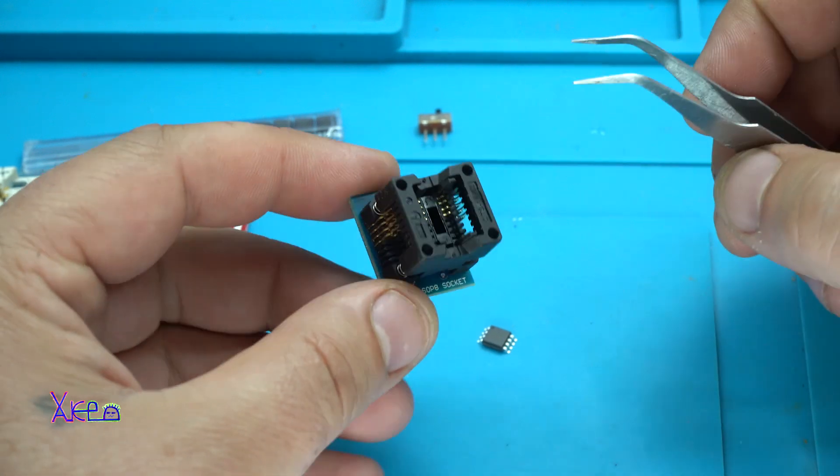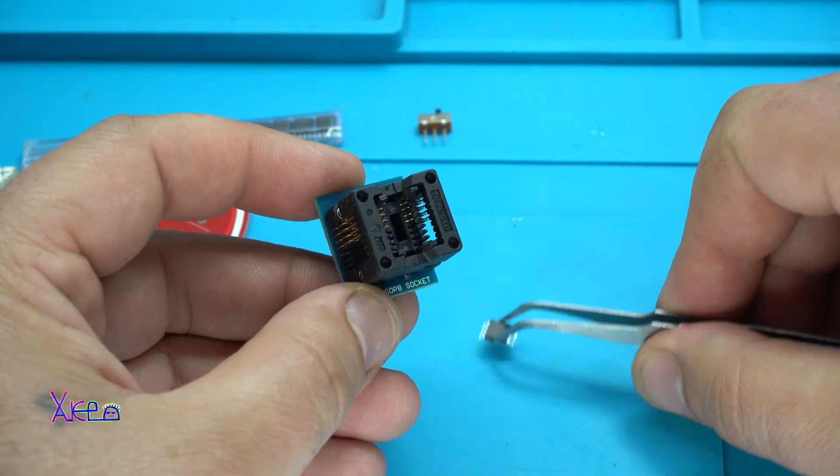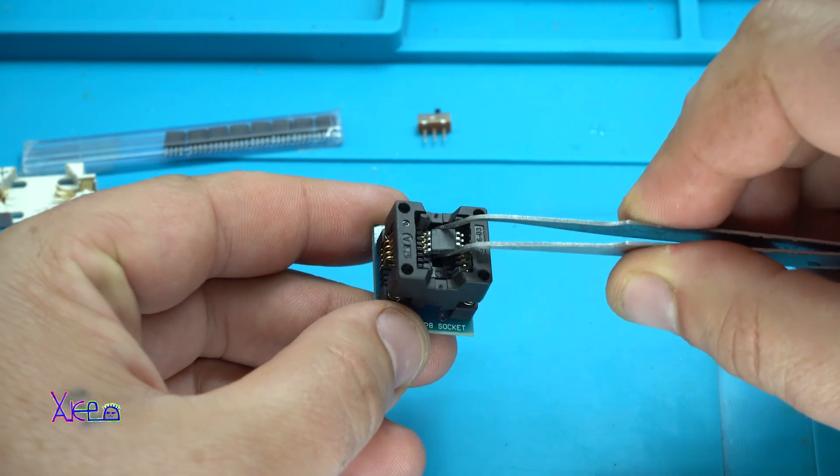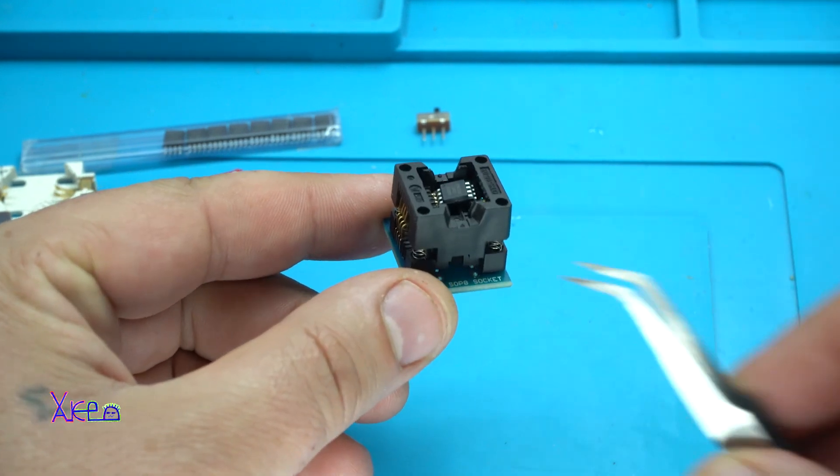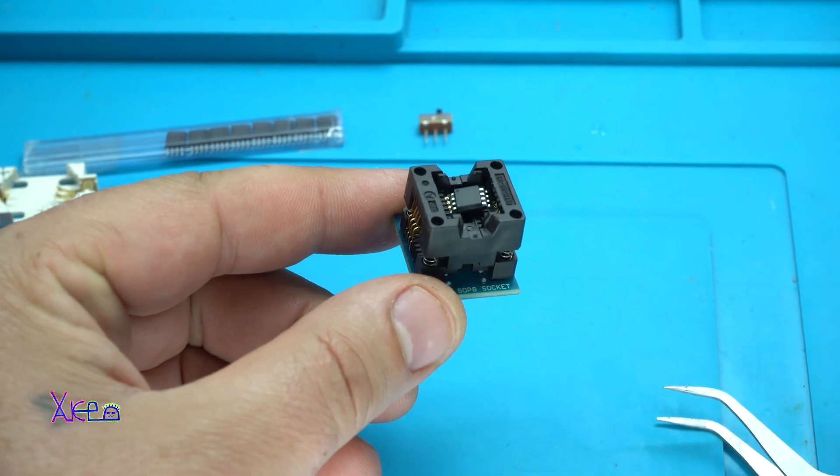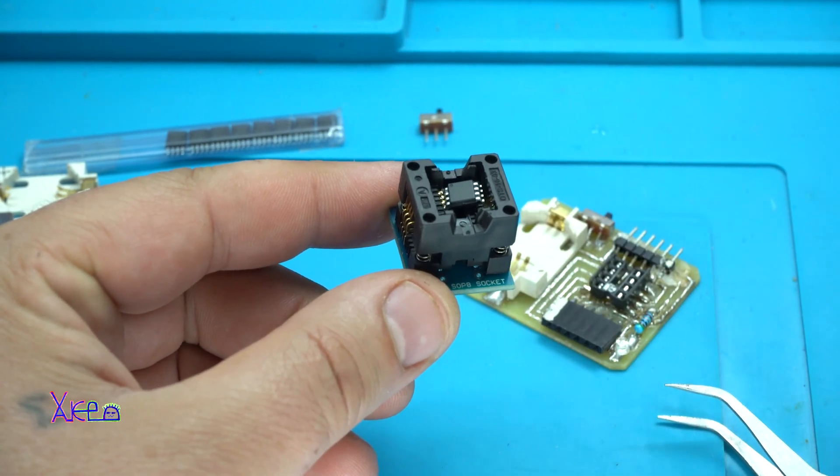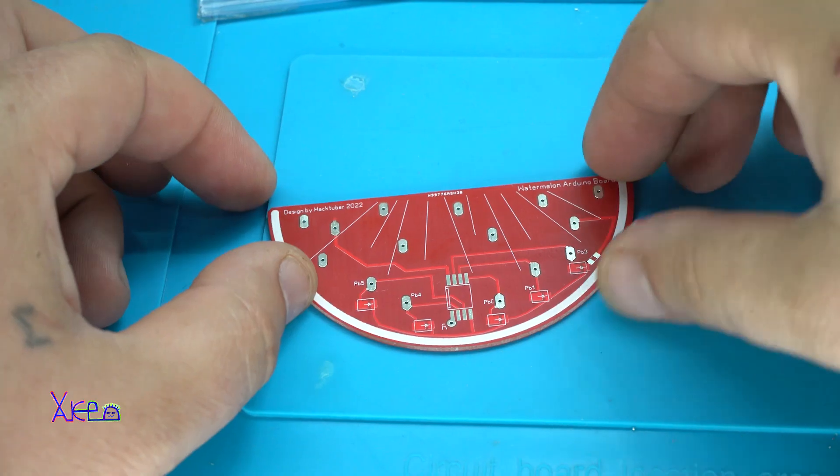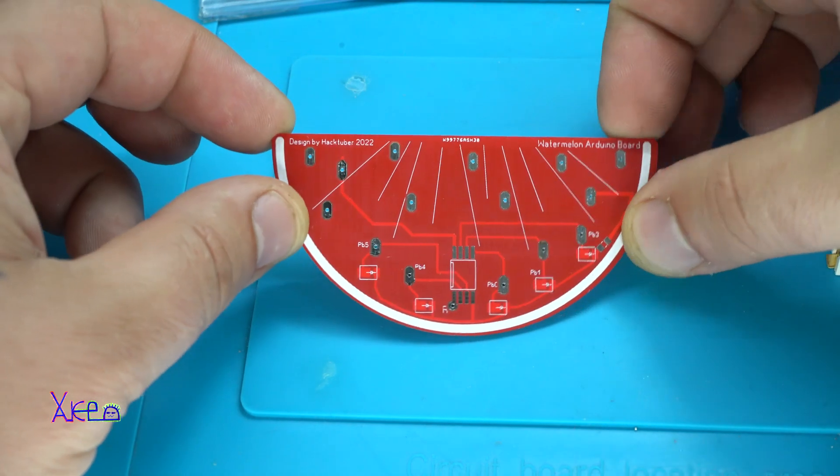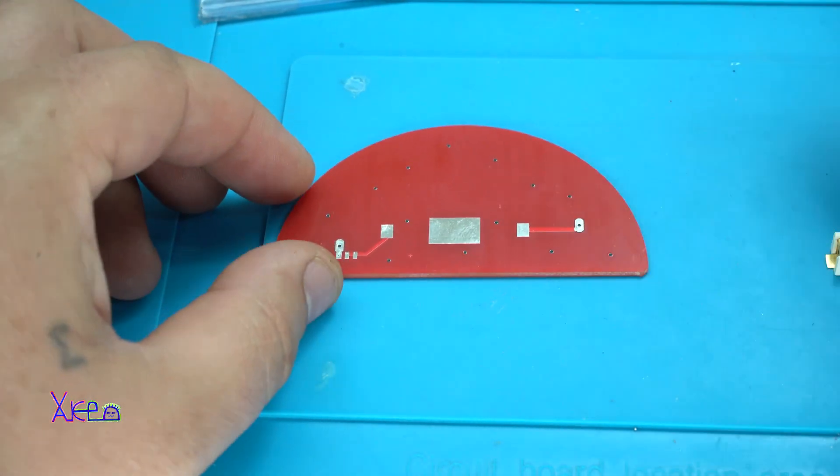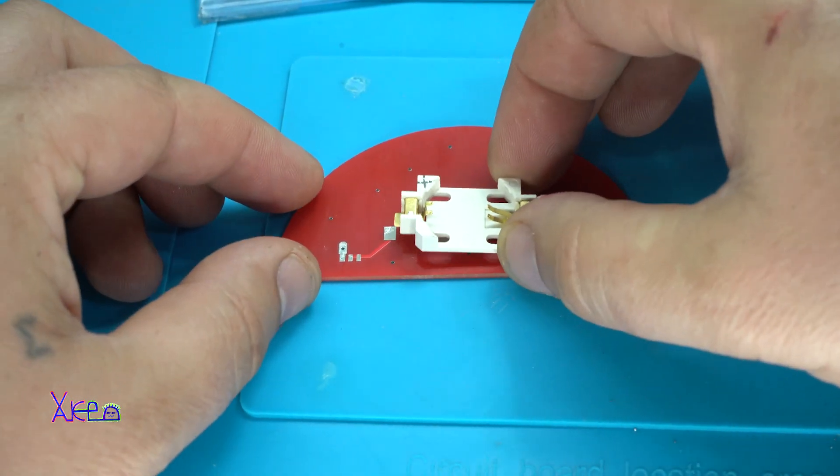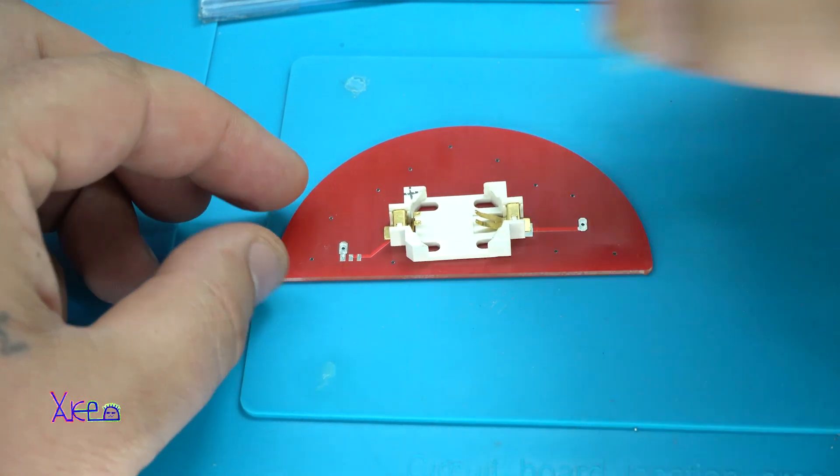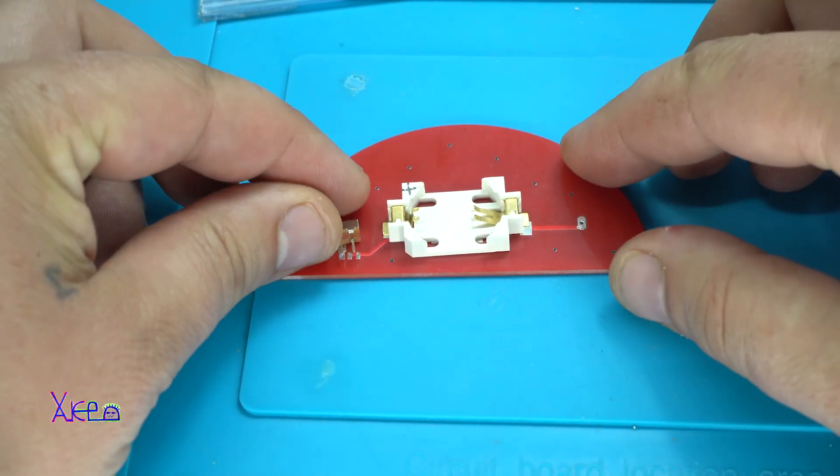I am using this adapter for programming the SMD ATtiny85 microchip. Ok. And this will go in my second adapter. And then go to the USB. The first thing that I am gonna solder will be the battery holder. That is placed right here. And the switch here.